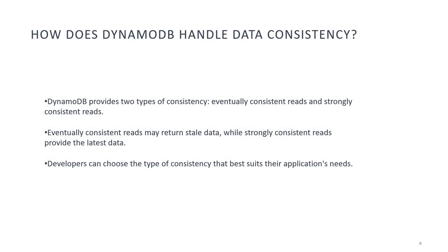How does DynamoDB handle data consistency? DynamoDB provides two types of consistency: eventually consistent reads and strongly consistent reads. Eventually consistent reads may return stale data, while strongly consistent reads provide the latest data. Developers can choose the type of consistency that best suits their application needs.